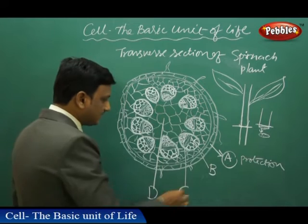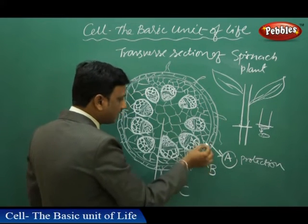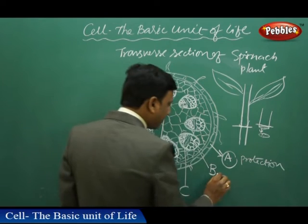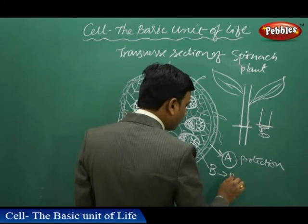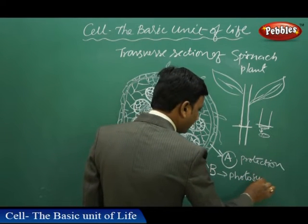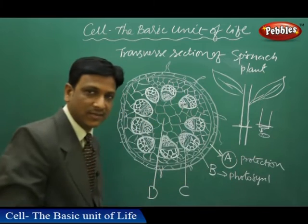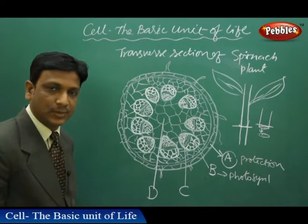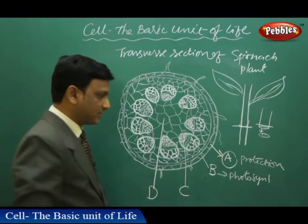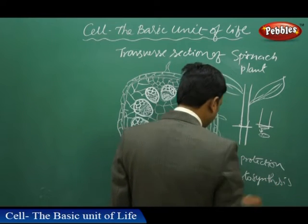Let us see Group B. The Group B cells are below the Group A layer, and these cells perform photosynthesis if they are green. If you see spinach, the stem is also green, which means it has chlorophyll and carries out photosynthesis. So photosynthesis is done by the layer below Group A.